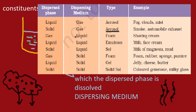Similarly, we have gas-in-liquid type, which is shaving cream; liquid-in-liquid type, called an emulsion — a common example is milk; and solid-in-liquid type, which is called a sol. The example of soil particles in water that we discussed is also a solid-in-liquid type colloid — a sol.